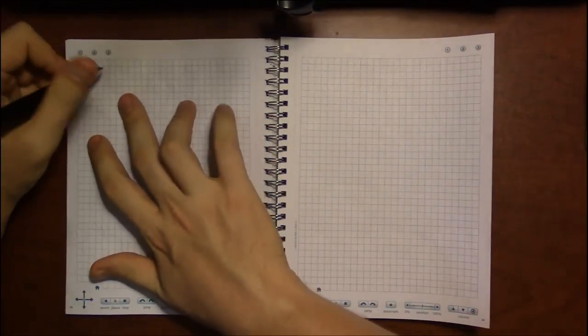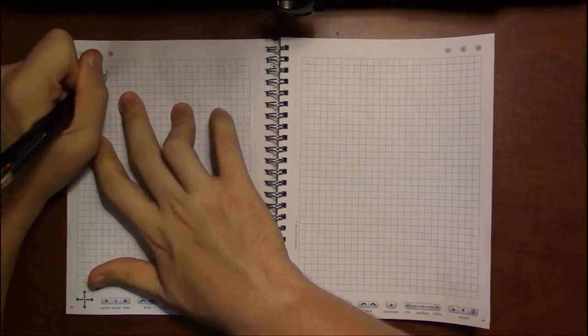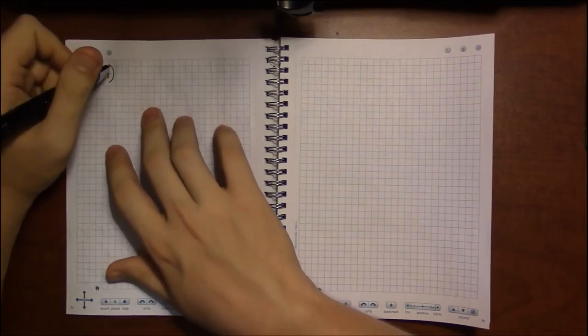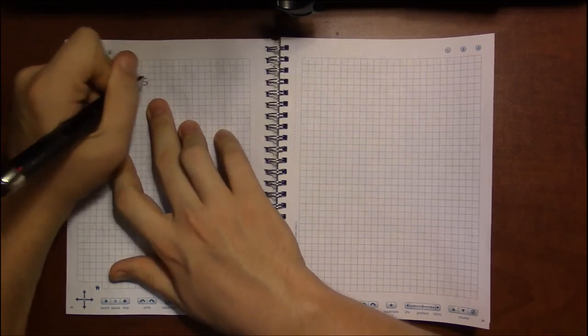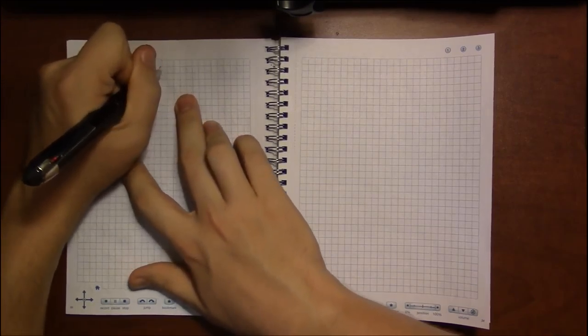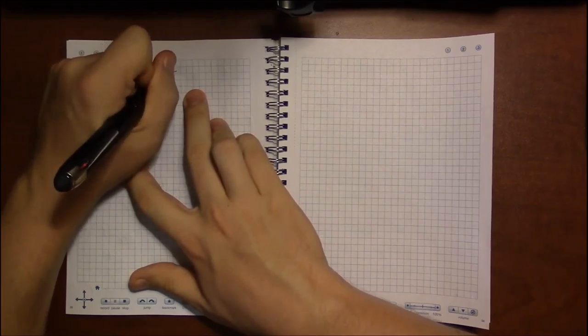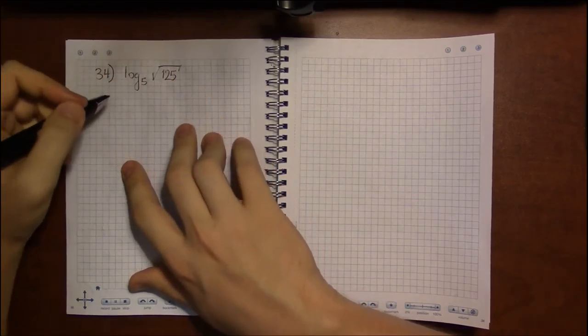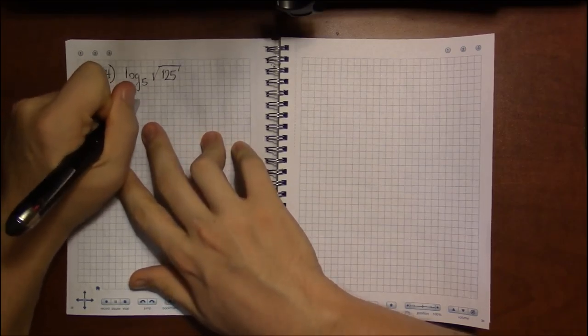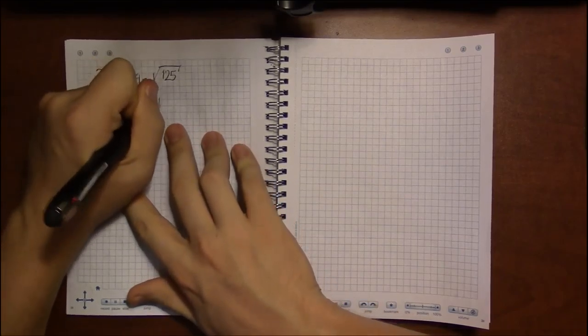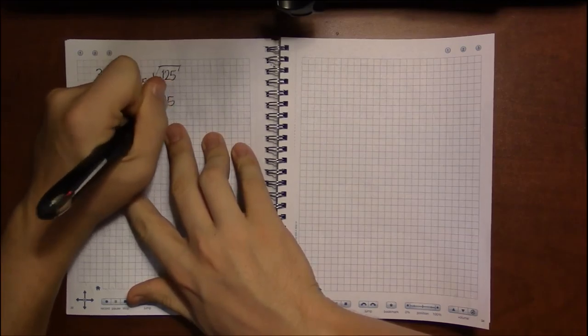And if we take a look at one more, something like 34, looking at log base 5 of the square root of 125. Well, I know how to convert a square root into an exponent. That's just to the 1 half power.